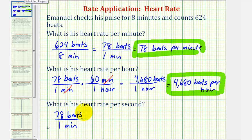Or using the unit fraction, because we don't want minutes in our answer, we would have minutes in the numerator, seconds in the denominator. And then because this fraction must equal one, we would have one minute in the numerator and 60 seconds in the denominator. Again, notice how minutes simplifies out, leaving us with beats per second.